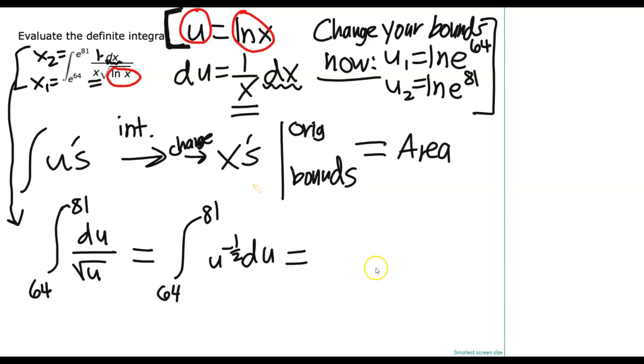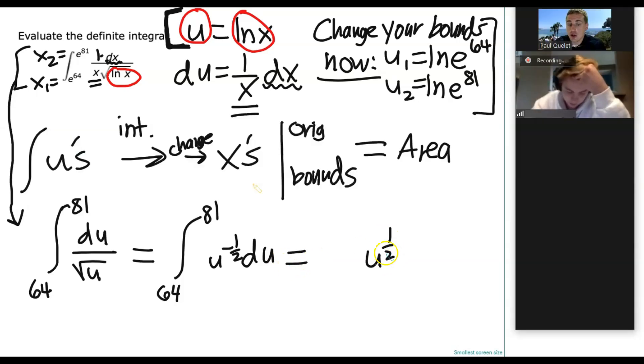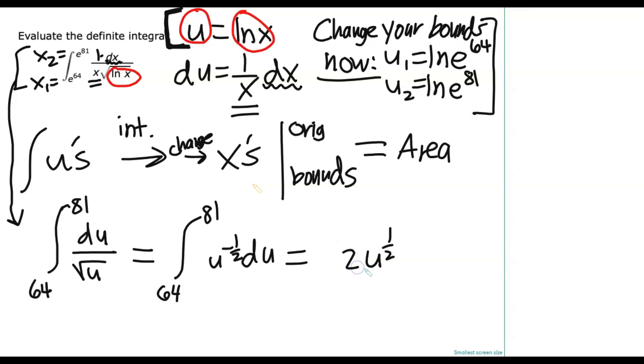But let's move on. What's the next step? We go 1 power higher. We'll be careful. Remember, du goes away. So we get u to the 1 half. What comes out front, though? Right. So always say it to yourself out loud. 1 power higher on the exponent multiplied by the reciprocal of the new power in front. So that's going to be 2. Because 2 over 1, right? And then here's our bounds, 81 and 64.